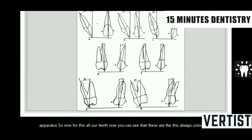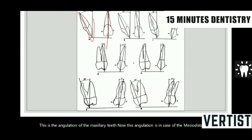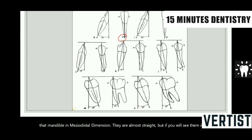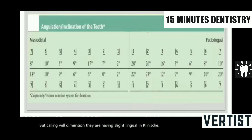In short, the angulation of the maxillary teeth — this angulation is in the case of the mesiodistal plane. This is for the central incisor, lateral incisor, canine, and so on. The same applies for the mandible. In the mandible, in the mesiodistal dimension, they are almost straight. But in the buccolingual dimension, they have a slight lingual inclination. These are just degrees of inclination each individual tooth has, and we have to be close to these values so that the teeth will be functioning properly.